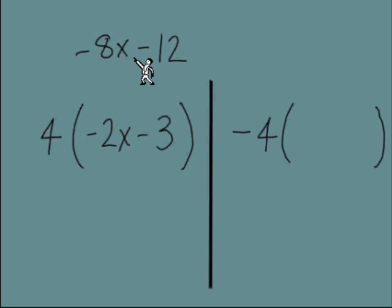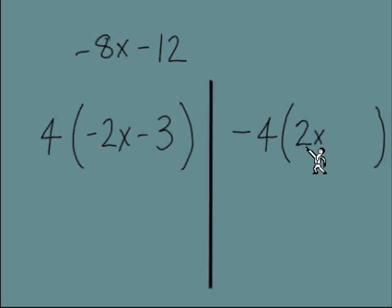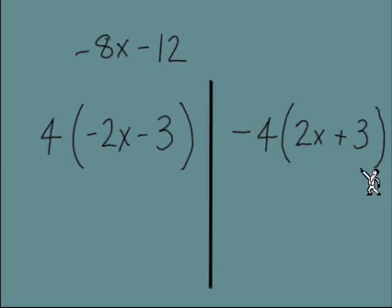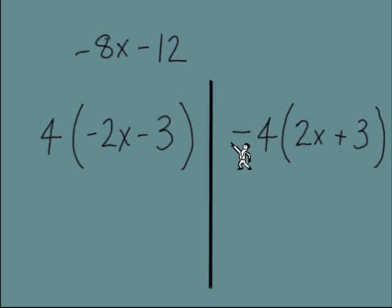But what if you looked at these two terms that were negative and said we could divide out a negative 4? That would leave inside the parentheses a positive 2x and a positive 3. Both ways are correct. We will see some situations in the future where you will want to find a negative number for your GCF.